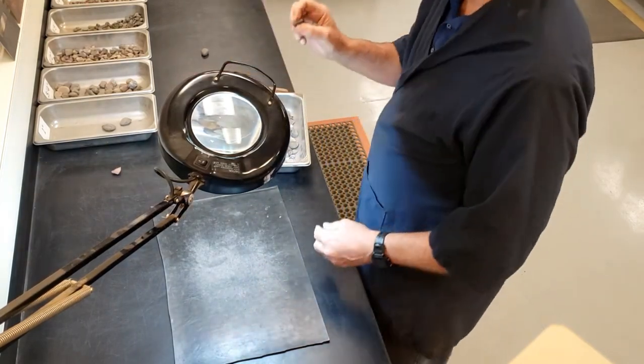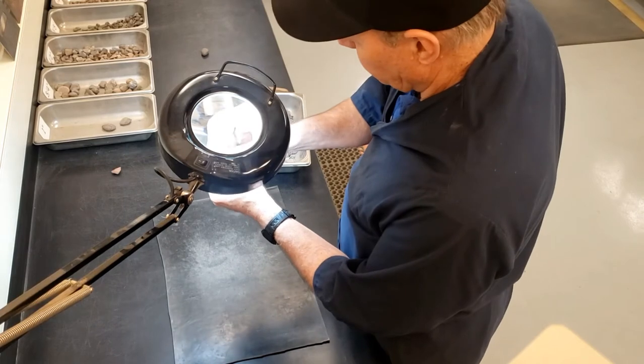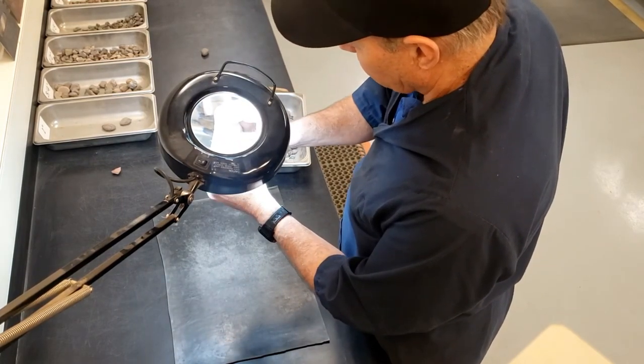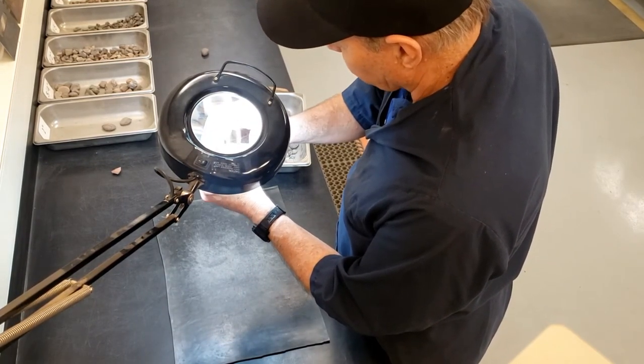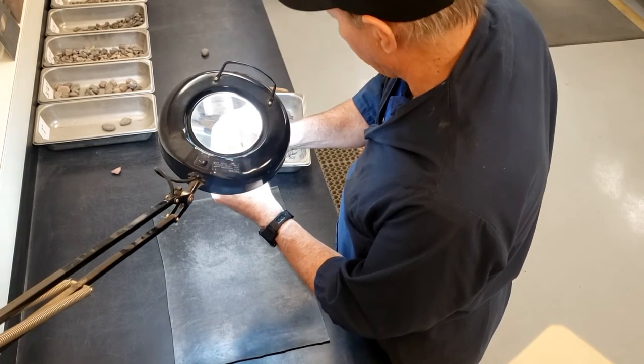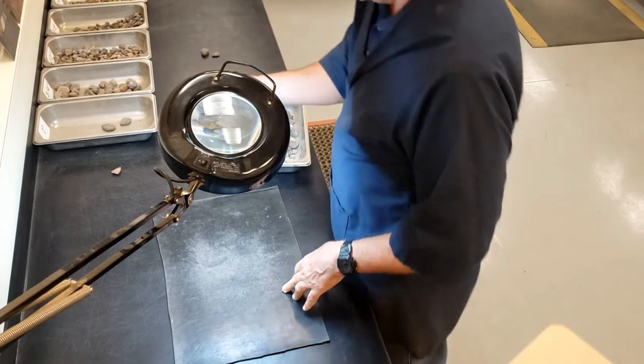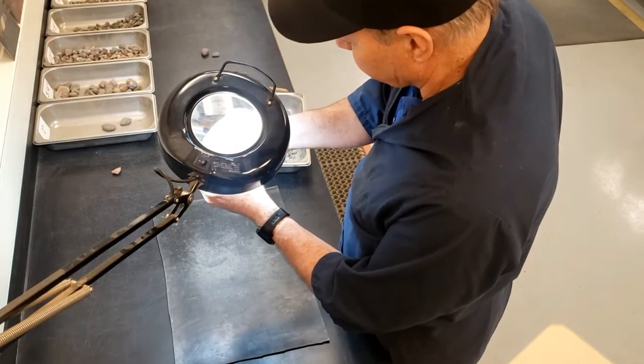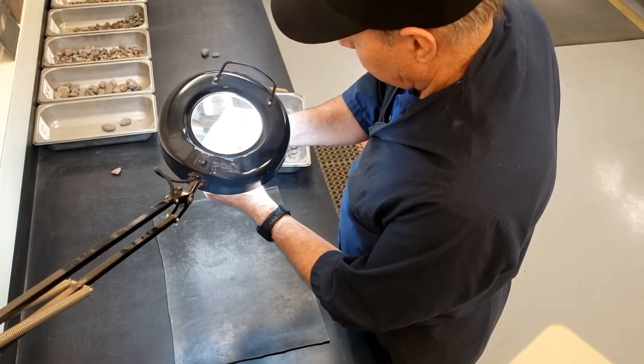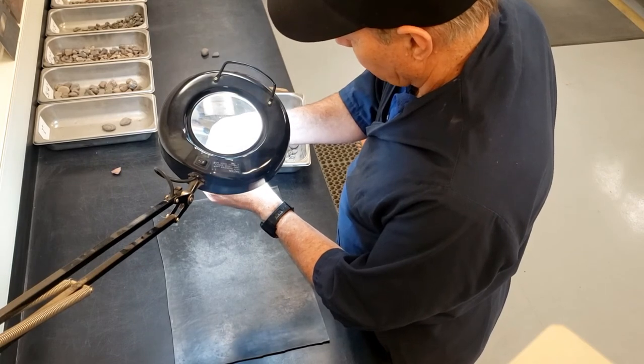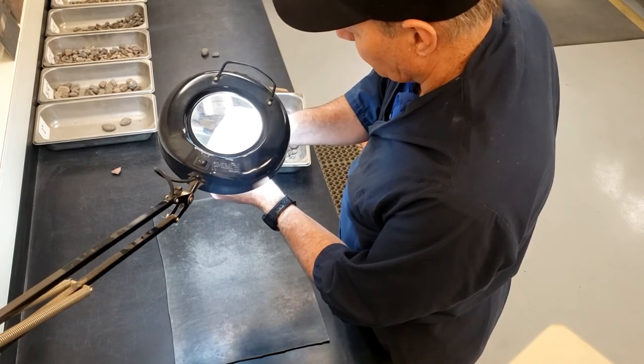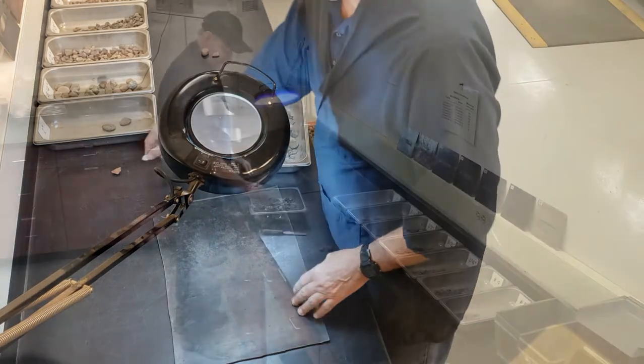This one here has an obvious fracture, but it's no longer sharp and well-defined, so that would be considered non-fractured. Here we have one that has some fractures, and there are a couple places here that are sharp and well-defined, so I would call that a fractured face.